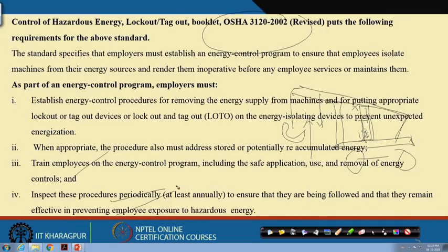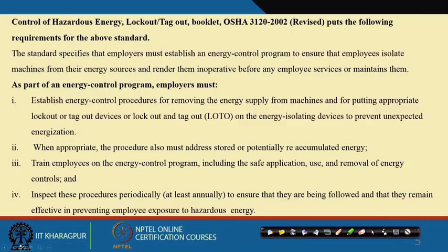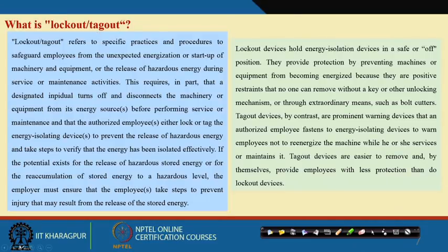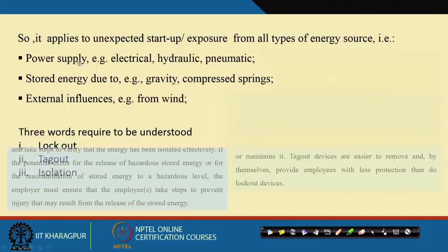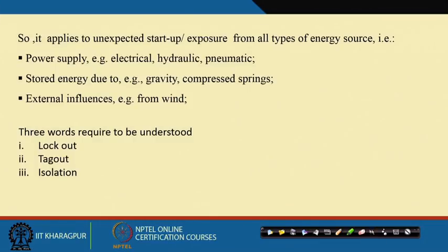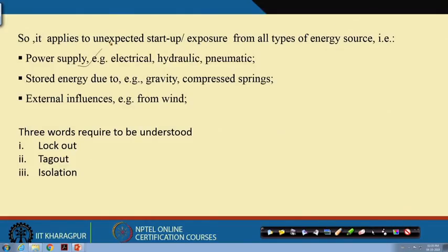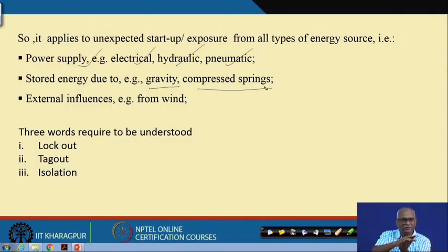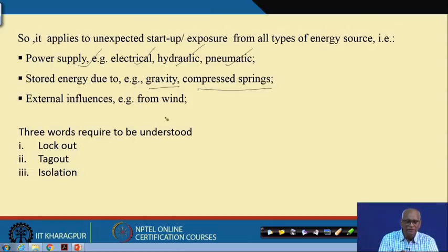What are those energy sources we are talking about? Power supplies — electrical, hydraulic, pneumatic — stored energy due to gravity, compressed springs (a compressed spring has stored energy and must be returned to its normal position before people work), and external influences such as wind energy — all those must be isolated before people go.